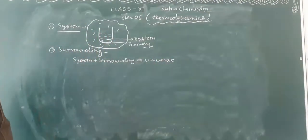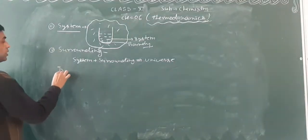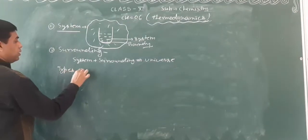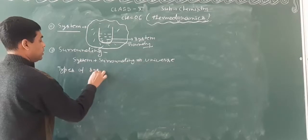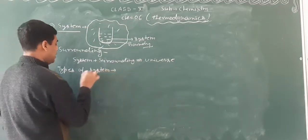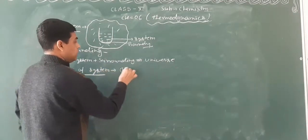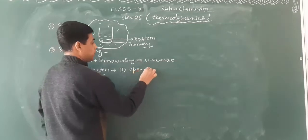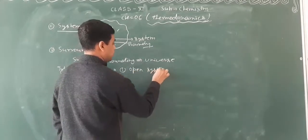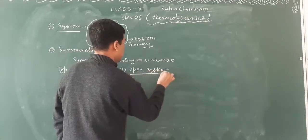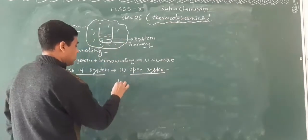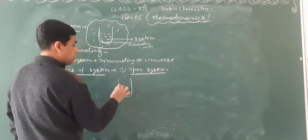Now, types of systems. There are three types of systems. First is open system.